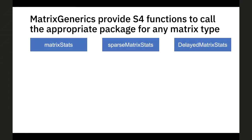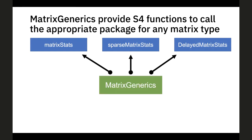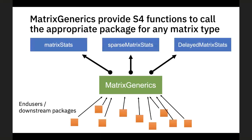The last thing I want to talk about is how you can incorporate sparseMatrixStats, matrixStats, and also the DelayedMatrixStats package by Pete Hickey — which does for delayed matrices what my package does for sparse matrices. The solution for being able to handle all those different implementations together is a fourth package, the matrixGenerics package, which dispatches based on S4 generics. So if you call the colVars function with a specific type of matrix, the correct downstream package is called. All end users and other packages don't need to worry about this — they can simply depend on matrixGenerics and whatever matrix type they have will be dispatched to the correct worker package.